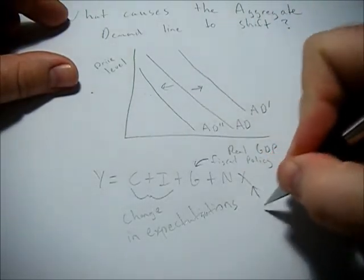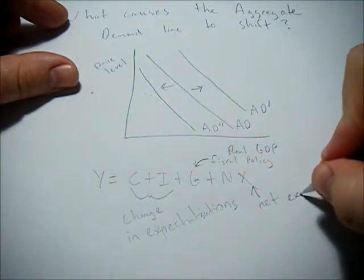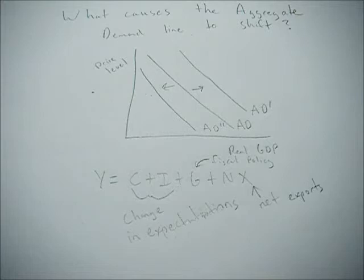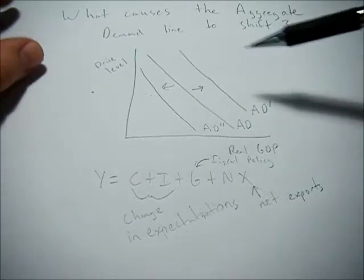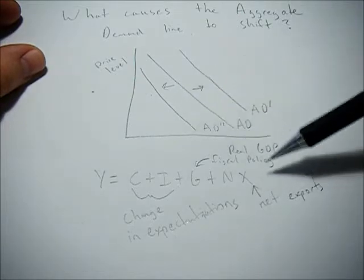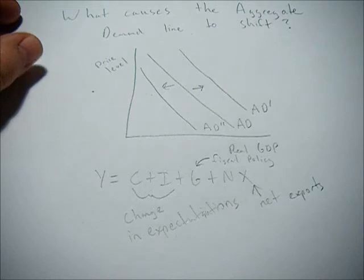For net exports, this would be caused by a change in currency. Currency could become stronger or weaker. If your currency becomes stronger, the exchange rate goes up, then your exports become more expensive in other countries, so less are bought. This means exports go down, and thus net exports decline. A decline in exports is going to cause aggregate demand to shift left. NX goes down, Y goes down, leftward shift.